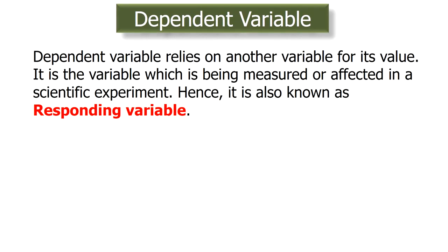Dependent variable. A dependent variable is the variable which relies on another variable for its value. It is the variable which is being measured or tested in an experiment. It indicates how the change in independent variable has affected the dependent variable, and that is why it is also known as the responding variable. In a scientific experiment, the experimenter changes the value of the independent variable so as to observe and record its effect on the dependent variable.